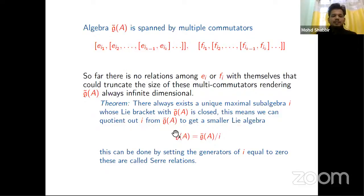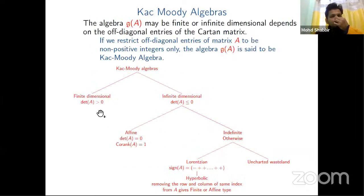May not be finite always, but we get a smaller algebra. Putting the generators of I equal to zero gives you the Serre relations. Now we classify our real algebra by Cartan matrix. The algebra g may be finite or infinite dimensional, depending on the off-diagonal entries of the Cartan matrix. If we restrict the off-diagonal entries of matrix A to be non-positive integers only, the algebra g is said to be a Kac-Moody algebra. Here you can see the following chart. We're interested in these three cases: the finite-dimensional, affine, and hyperbolic cases.